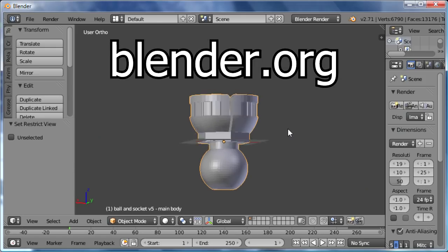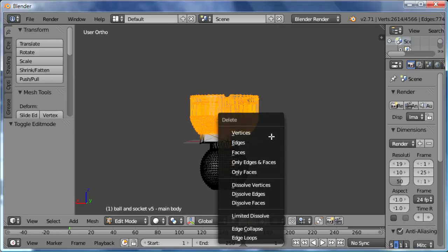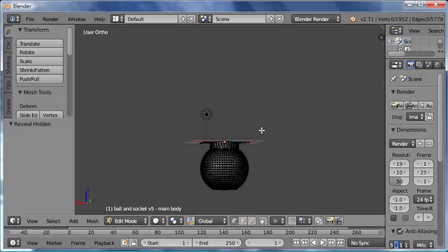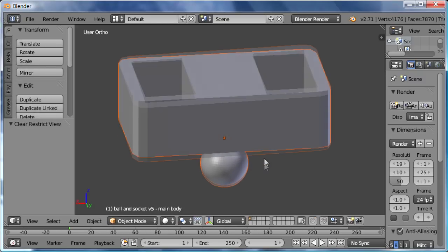I designed the magnetic holder in Blender, a free 3D modeling and animation software I use for a lot of my videos. To get the perfect matching ball, I first imported one of the ball and socket joints which I downloaded from Thingiverse. I deleted the socket portion and drew the magnet holder onto that.